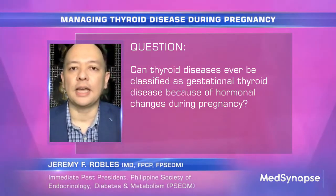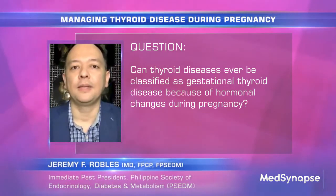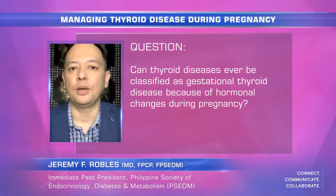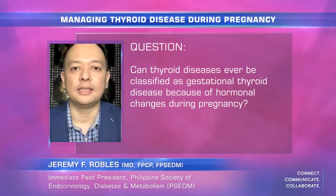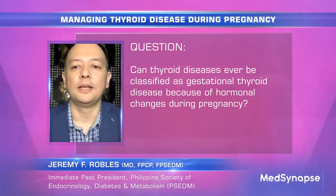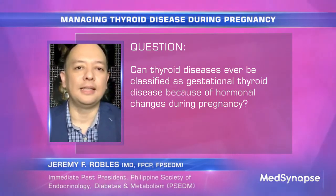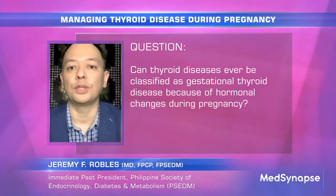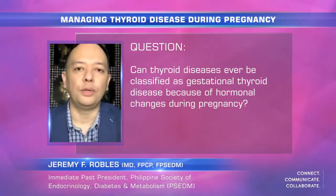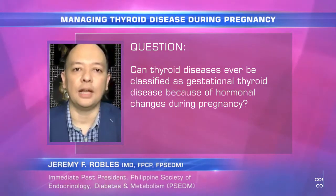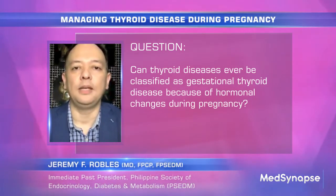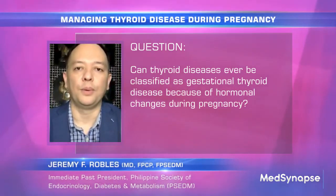A lot of these thyroid disorders occur before pregnancy, and therefore some patients may have infertility problems related to the thyroid. But some of them may have their pregnancy and develop the disorders during the period of their pregnancy. That being said, subclinical thyroid disorders are of concern to all of us — they can also affect the outcome of pregnancy, whether or not the baby is going to be okay or if there's going to be any problem.